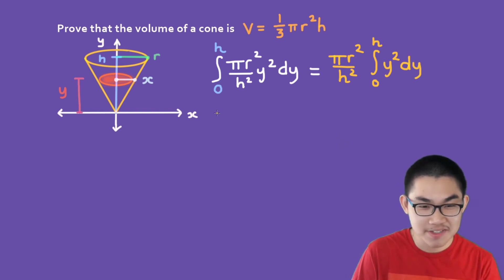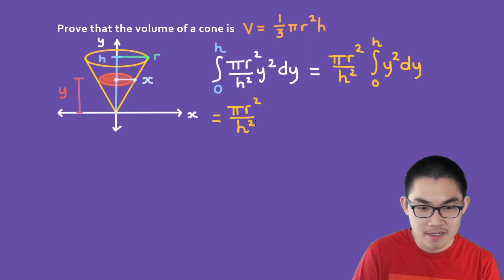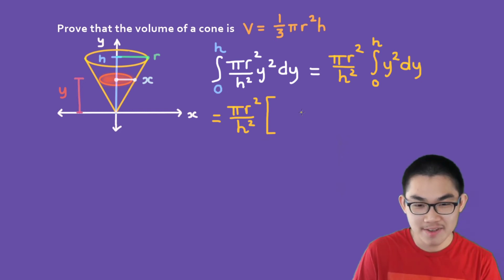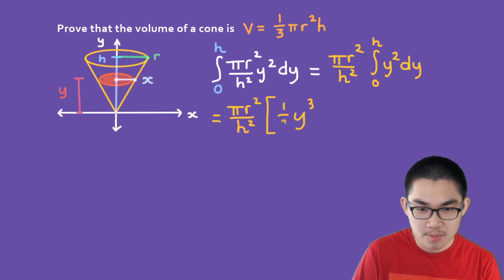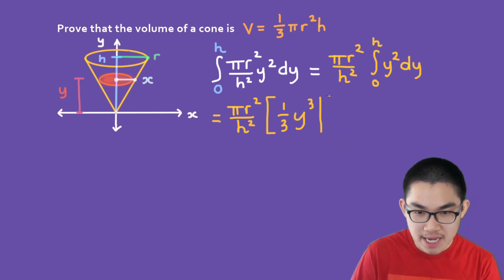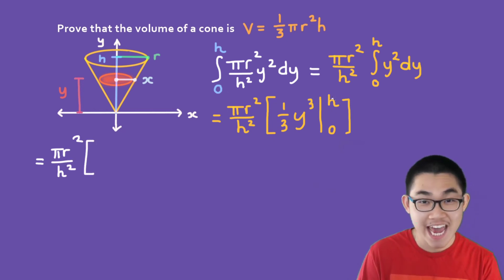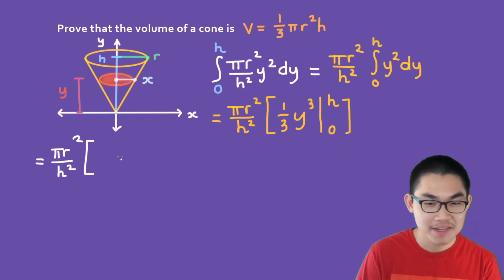This integral is easy to solve. We have πr²/h² times the antiderivative of y². To find the antiderivative, we add 1 to the exponent: 2 + 1 = 3, giving y³, then divide by that exponent, giving (1/3)y³. Don't forget the upper and lower bounds, which are h and 0. So we have πr²/h² times (1/3)y³ evaluated from 0 to h.